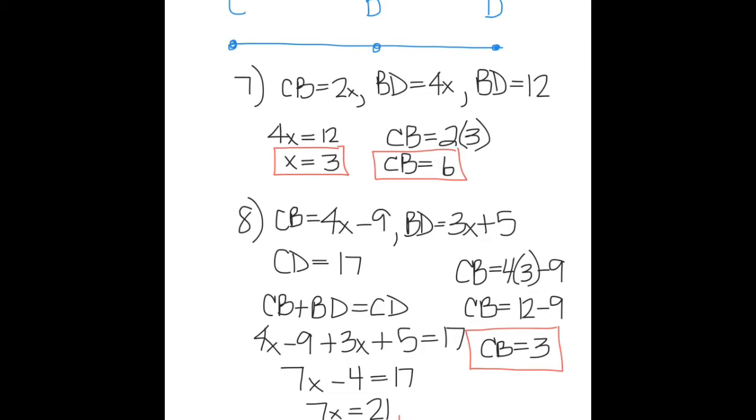Number seven, drawing the segment, I see that B is between C and D. If CB is 2x, BD is 4x, and BD is also 12, that means that 4x must equal 12, which means that x equals 3. Plugging that back into CB, I find out that CB equals 6.